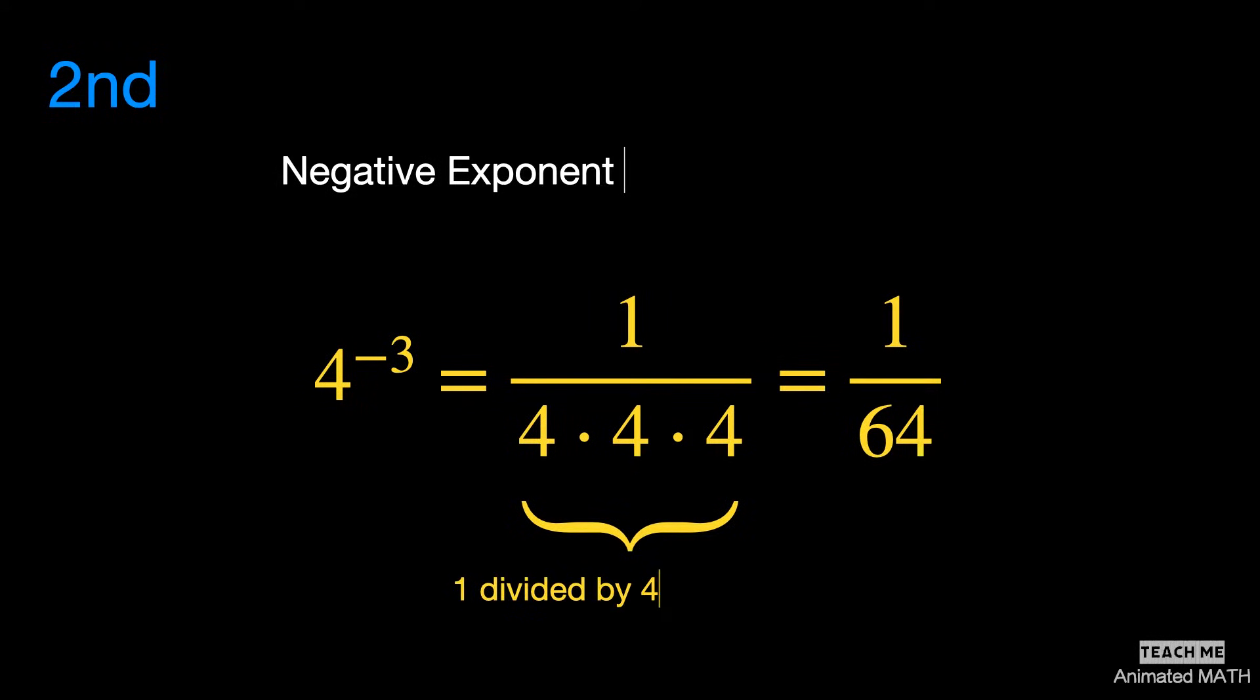Second, the opposite of multiplication is division, which is why a negative exponent says how many times you have to divide one by the base number.